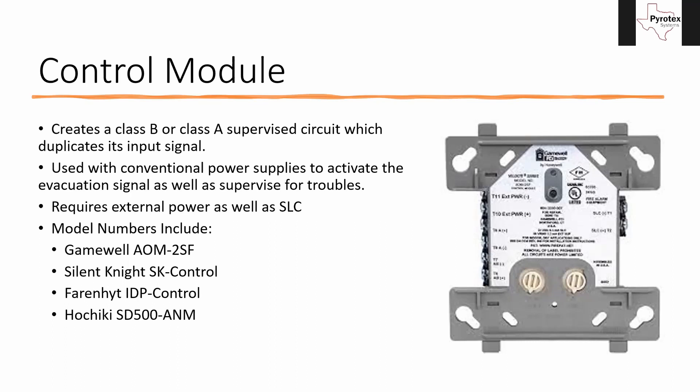It also supervises for trouble at the same time. If that power supply goes into trouble — whether there's an open NAC circuit, a ground fault, battery troubles, power loss, water damage, or anything else — it's going to open up the circuit between this module and the end-of-line resistor that comes with it. It'll tell us, 'Power supply number three in this electrical room has a fault.' It's not any more intelligent than that; it can't tell us what the fault is, but it can send us to the right power supply so we can further diagnose.